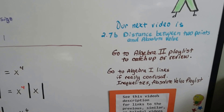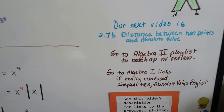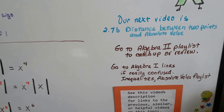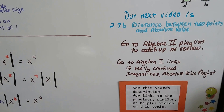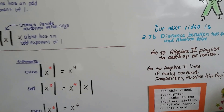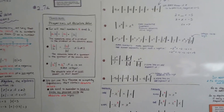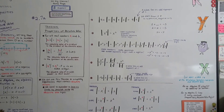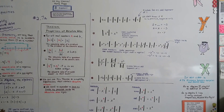Our next video is 2.7b, where we'll talk about the distance between two points on a number line and some absolute value. You can go to the description of this video to find the link to the Algebra 2 playlist if you want to catch up, review, or study for a test. There will also be a link to the Algebra 1 playlist for inequalities and absolute value. I hope this helped you and I hope you're having a great day — it's a gorgeous day here in Illinois. See you next video, bye!